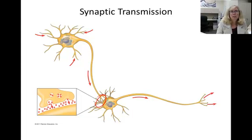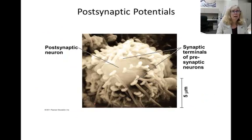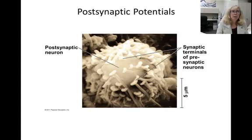Most neurons actually have many presynaptic neurons, and each of them may release different neurotransmitters onto the postsynaptic membrane.